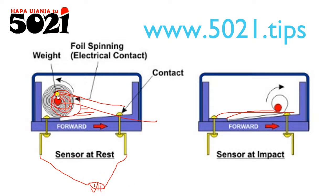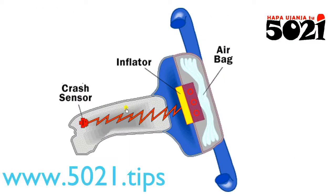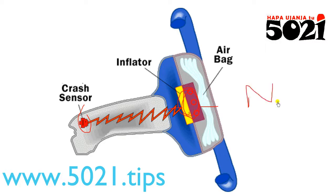This is the key — this is how the sensor rotates and triggers. As for how the inflator works, it's a chemical process. There is a gas called nitrogen — nitrogen is what inflates the airbag.